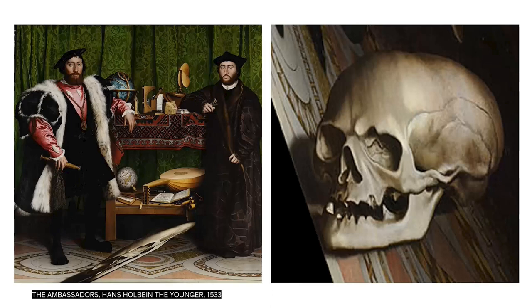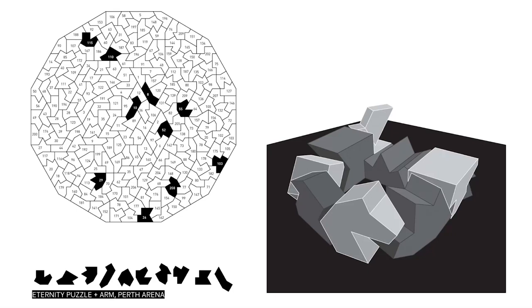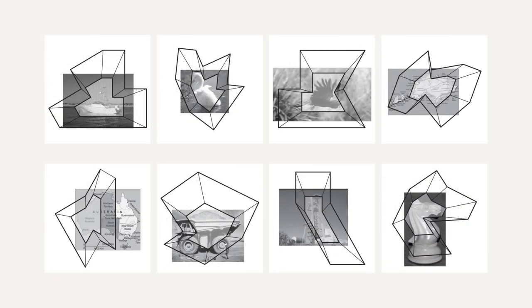That idea of a kind of memory or incomprehensible image of eternity buried somewhere in the work is something that we've had a long-term interest in as a practice. Those concepts have found their way into a few projects. This one is the Perth Arena, a building that is now built. Here we were looking at the eternity puzzle — named that because it would take that long to work it out. It is 209 different individual pieces. It turns out it doesn't take an eternity; it takes a couple of math wizards a couple of months. We used it to create the building by taking those puzzle pieces and reconfiguring them into an arena-type form.